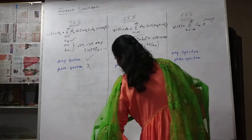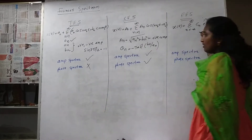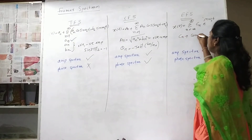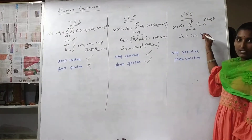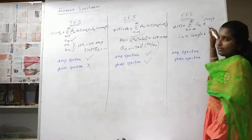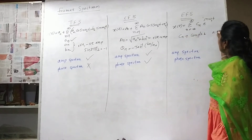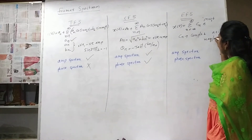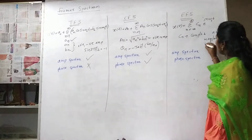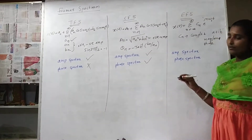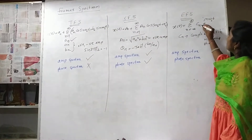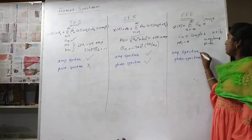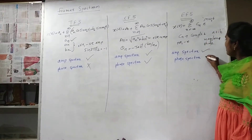For the exponential Fourier series, CN will take complex numbers because the expansion involves complex exponentials. A complex number a + jb has both magnitude and phase. Therefore, CN will take both positive and negative amplitudes, and both amplitude spectrum and phase spectrum exist for the exponential Fourier series.